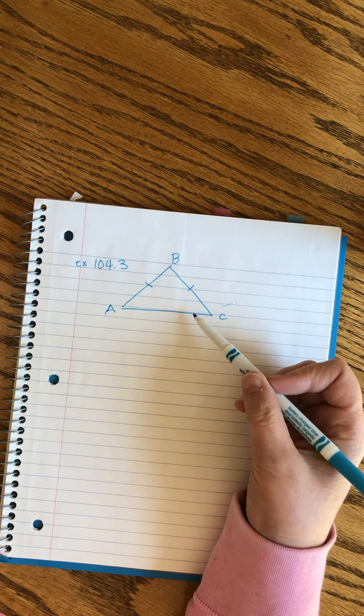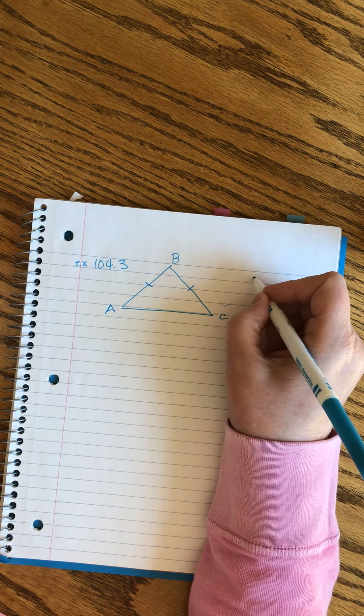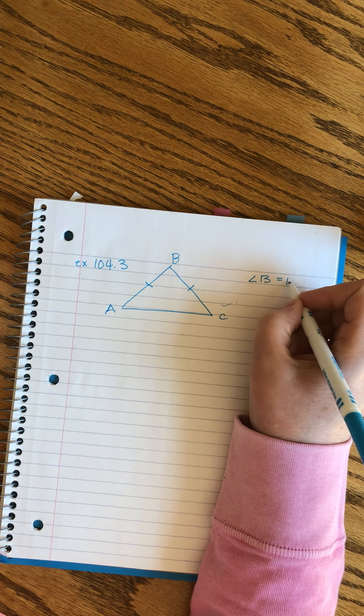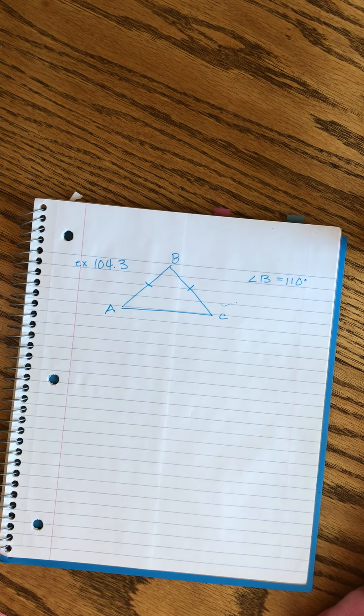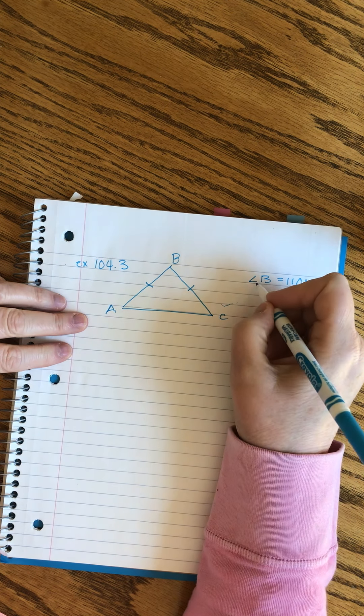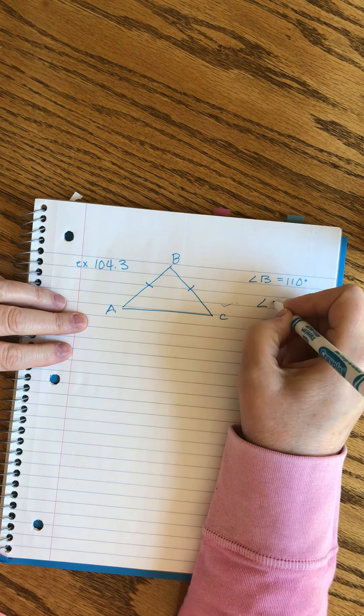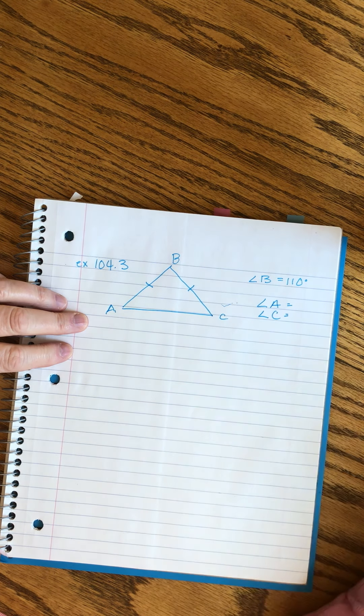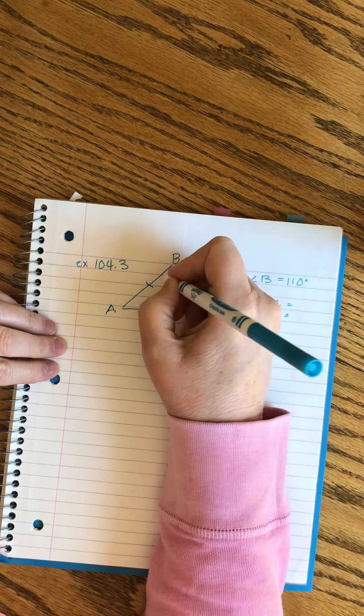The information tells us that angle B measures 110 degrees. What are the measures of angles A and C? We're supposed to find out these two. I'm going to write angle A equals and angle C equals - that reminds me of what the questions are. This one is 110.